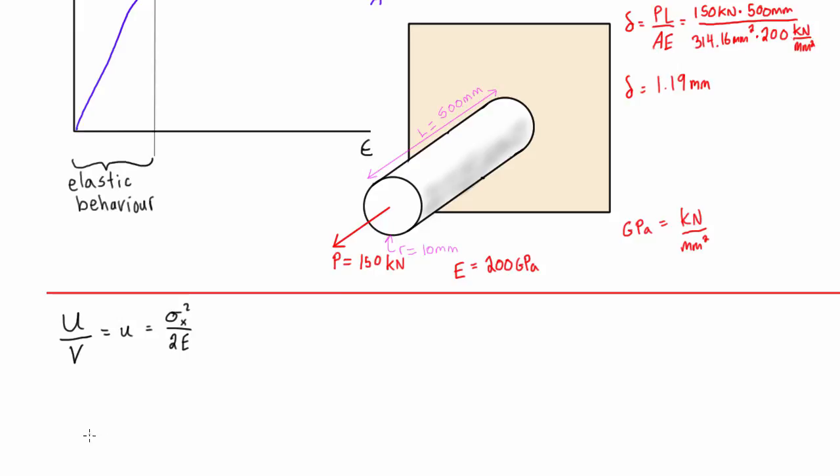If we want strain energy and again in this case it's elastic strain energy, then we can take the integral over the volume so we will go capital U here is equal to the integral of this expression we have sigma x squared over 2E and just dV.